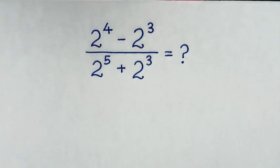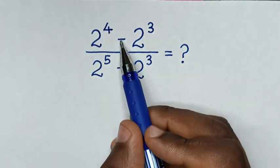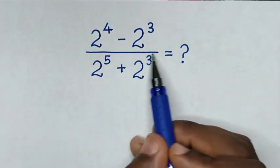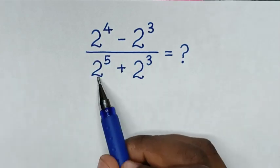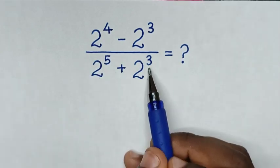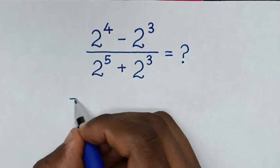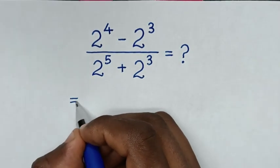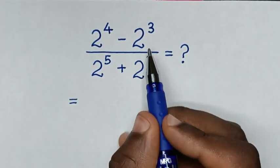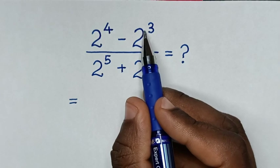Hello. We need to find the value of 2 power of 4 minus 2 power of 3, over 2 power of 5 plus 2 power of 3. In the numerator, we make 2 power of 3 common.